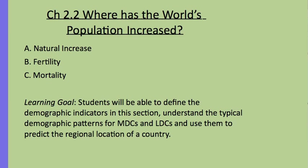This is Chapter 2, Key Issue 2: Where Has the World's Population Increased? This is specifically looking at demographic indicators — natural increase rates, fertility, and mortality. The learning goal is that students would be able to define each of the demographic indicators in this section, understand the typical demographic patterns for MDCs and LDCs, and then be able to use them to predict the regional location of a country that has those demographic indicators.